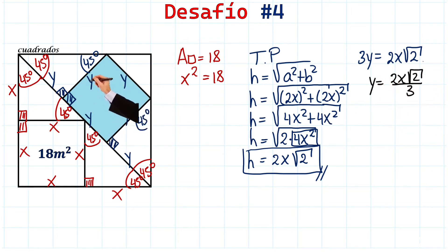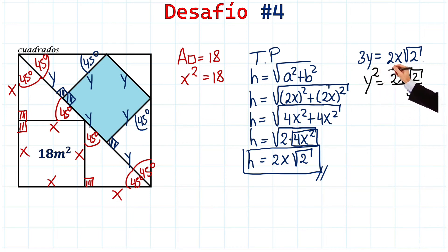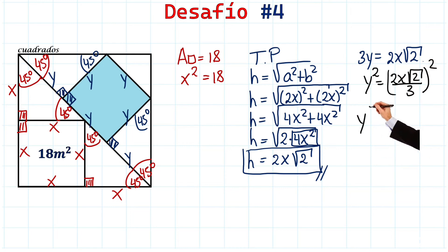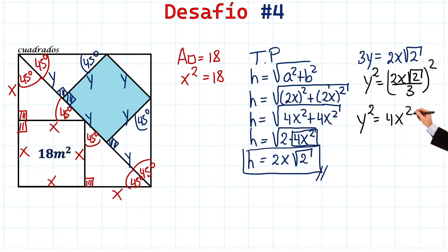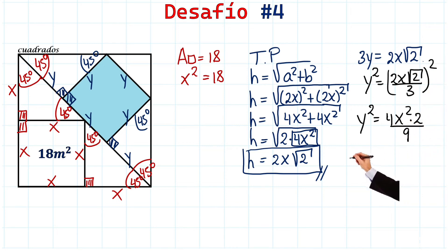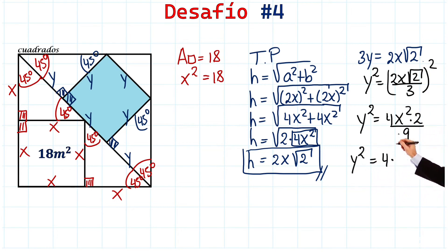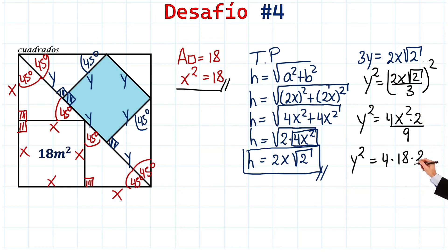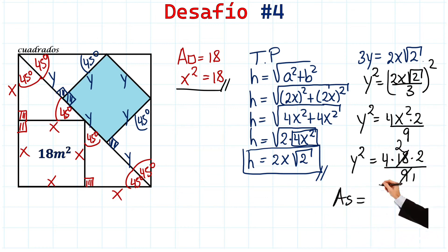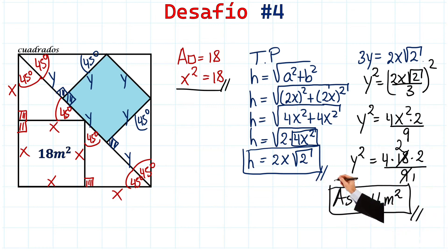To find the area, we need y squared. Squaring both sides: y² equals (2²times x² times 2) divided by 3², which gives us (4 times x² times 2) divided by 9. Since x² equals 18, we substitute: (4 times 18 times 2) divided by 9. Cancelling 9 gives us 4 times 4, which equals 16 square meters.